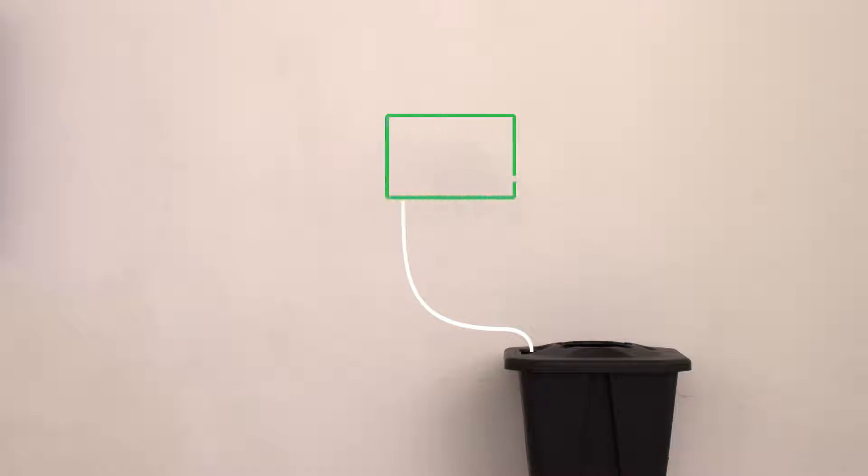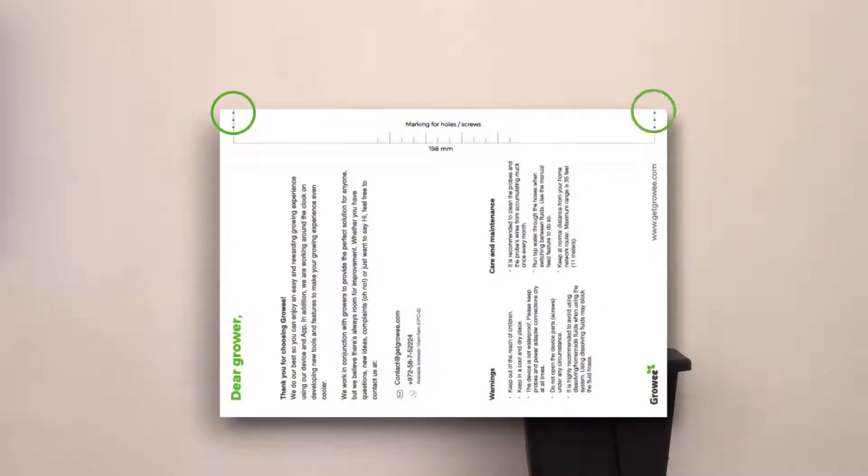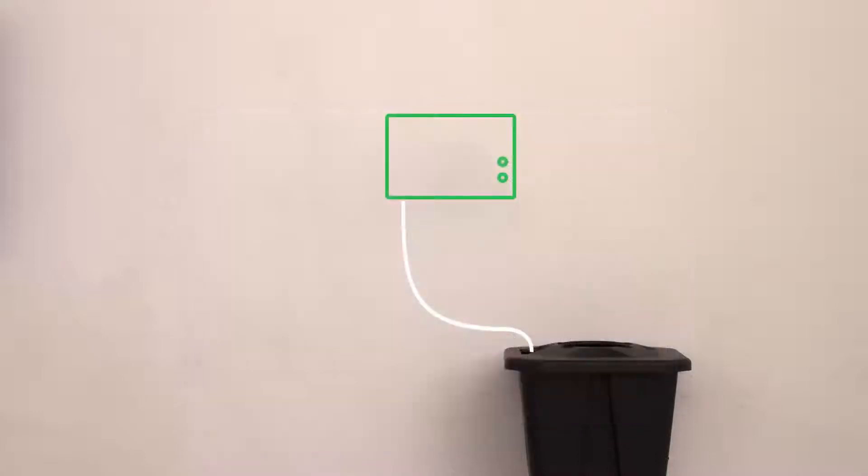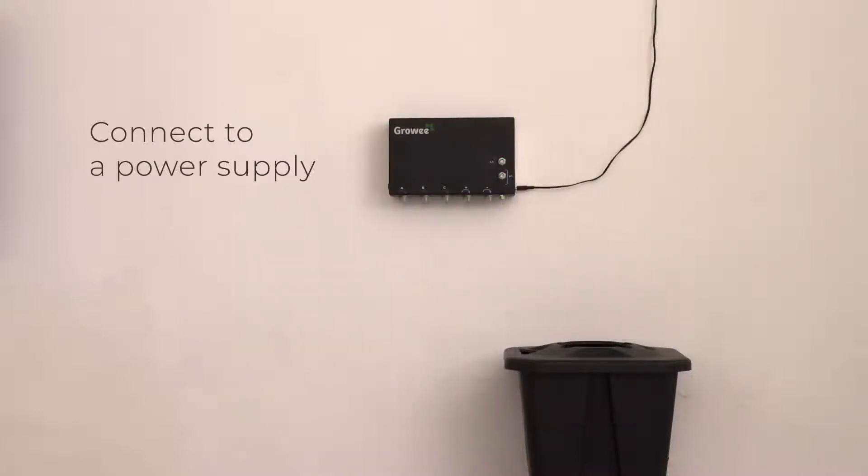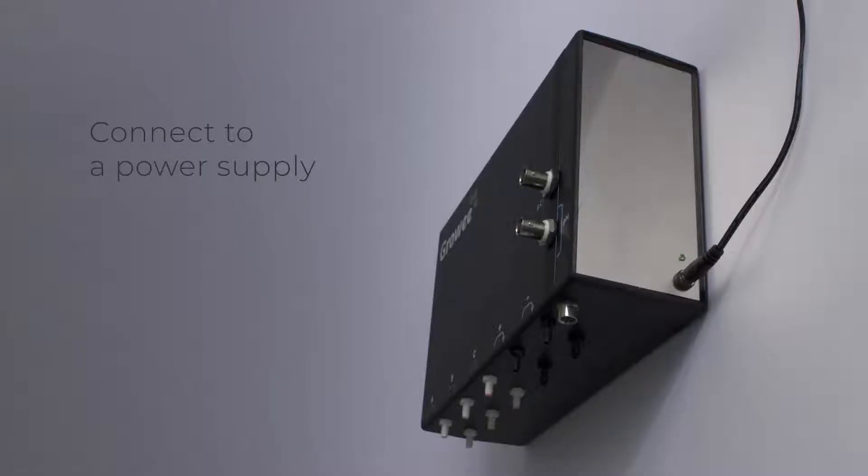Before hanging it, make sure that all of the three sensors are able to reach the water in the reservoir you're using. Use the quick start guide to easily mark the drilling points. Hang the device and connect it to a power source. The green light should be blinking.